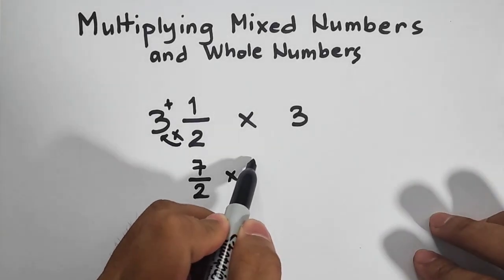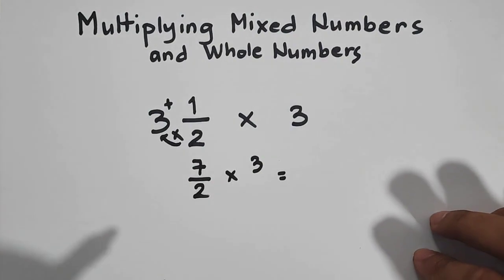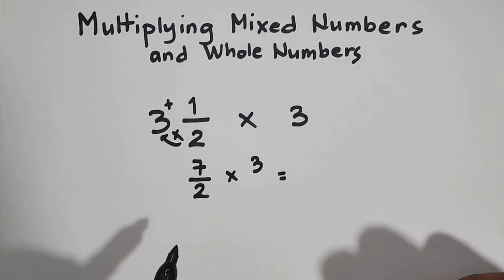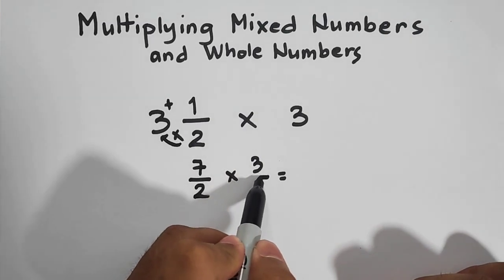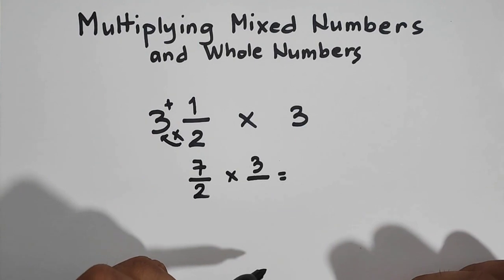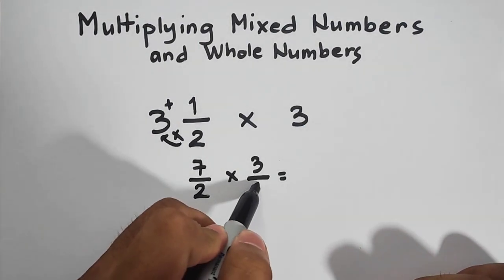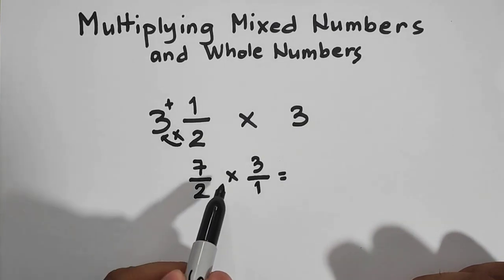Then times 3. So now, what's next is you will directly multiply 7 over 2 by 3. But always remember that if you want to express 3 or a whole number into a fraction, you can put 1 here because we have an invisible 1 as our denominator. So let's multiply.